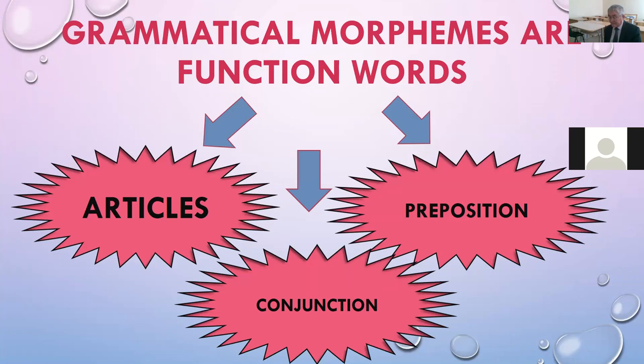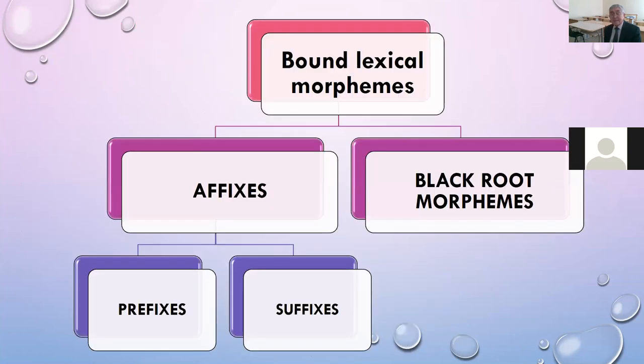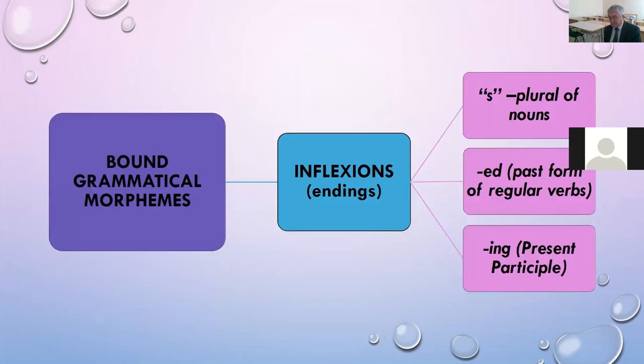Bound lexical morphemes are affixes, divided into prefixes and suffixes, and bound root morphemes. Bound grammatical morphemes are inflections: endings like s plural of nouns, ed past form of regular verbs, and ing, the form of present participle.